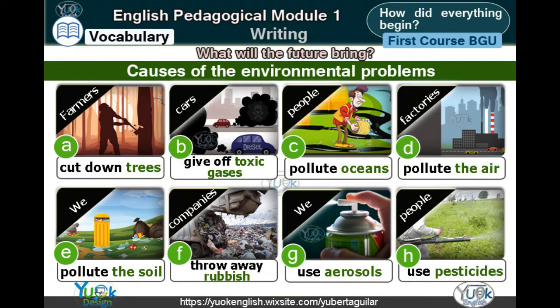Vocabulary: Causes of the environmental problems. Cut down trees. Give off toxic gases. Pollute oceans. Pollute the air. Pollute the soil. Throw away rubbish. Use aerosols. Use pesticides.